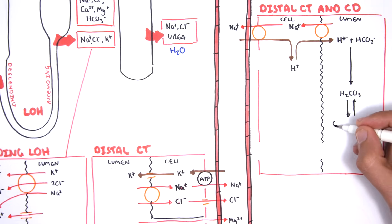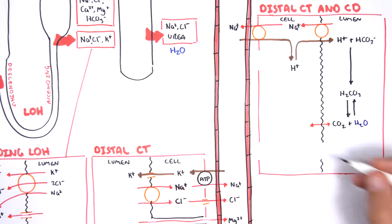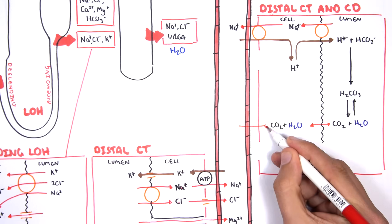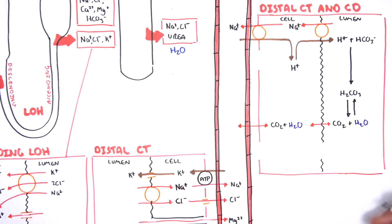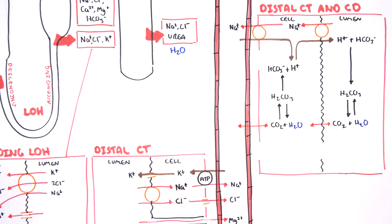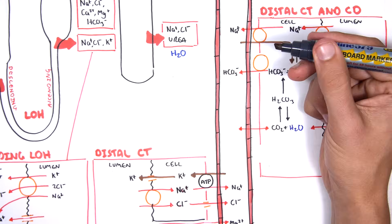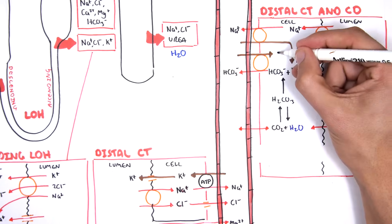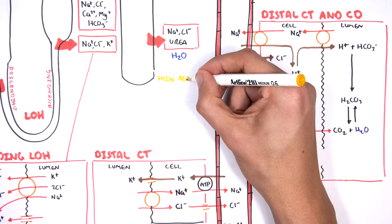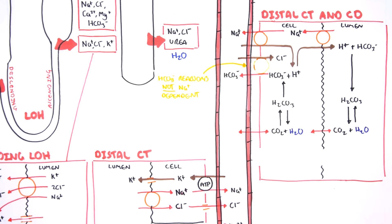Acid-base regulation allows hydrogen ions to interact with bicarbonate ions to become carbonic acid, then again to carbon dioxide and water. Carbon dioxide can diffuse easily in and out of the cell. Within the cell, carbon dioxide reacts with water and the reverse reaction takes place: water and CO2 become carbonic acid, then bicarbonate and hydrogen ions. Bicarbonate reabsorption into circulation uses a bicarbonate-chloride exchanger, so the key difference here is that it relies on chloride rather than sodium — it is not sodium-dependent, unlike the proximal convoluted tubule.